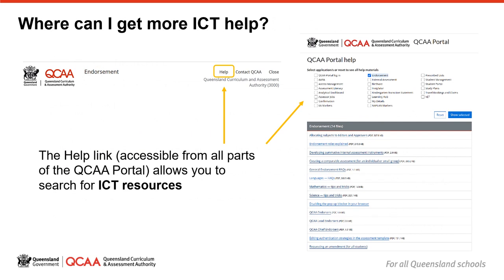Once you have logged into the QCAA portal, you can click on any of the help links to take you to a menu of all the ICT resources available. Then narrow the search by selecting endorsement. Resources include quick steps, FAQs, hints and tips, and troubleshooting for the endorsement application.